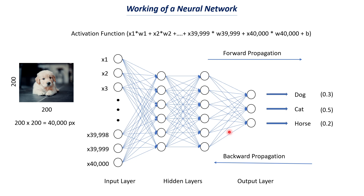If you think about a convolutional neural network, the working is pretty much the same. The only difference is that you have different kinds of layers called convolutional layers, whose working is a bit different, but the overall idea of how neural networks work remains the same. We will discuss CNNs in a later part of this course. I hope everyone is clear with this, and I'll see you in the next upload. Thanks for watching.